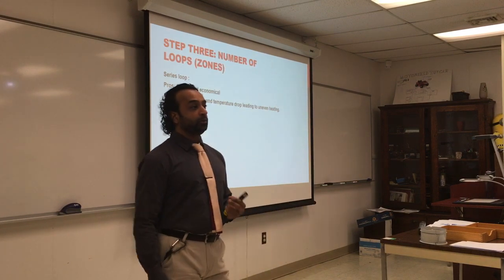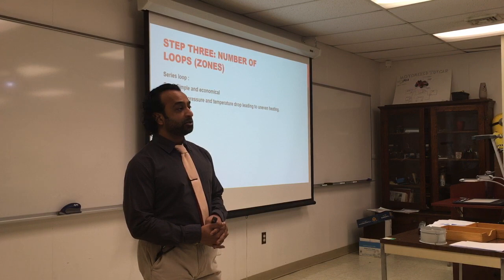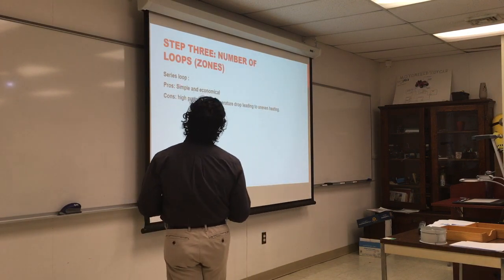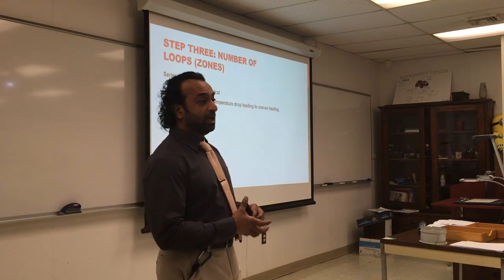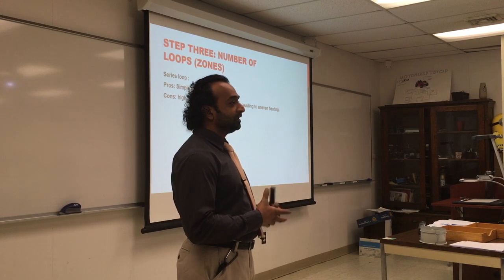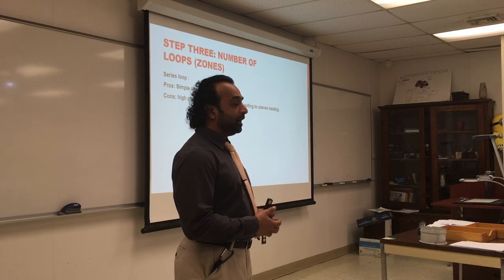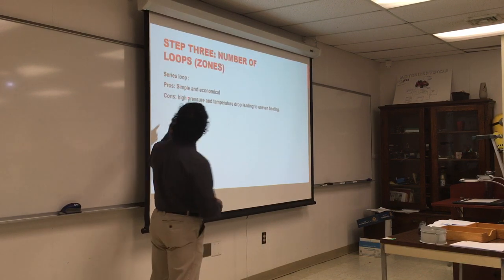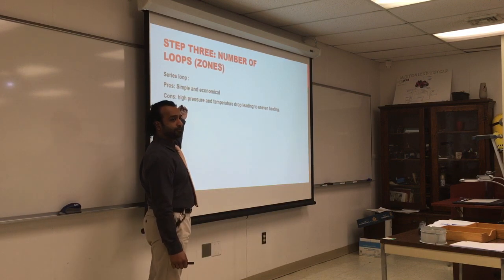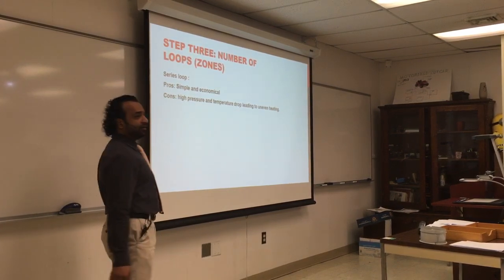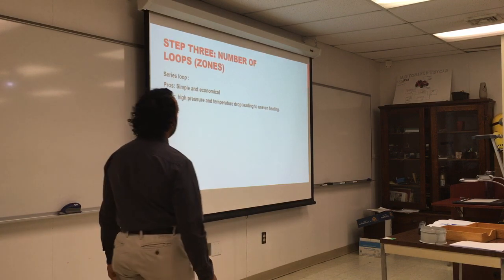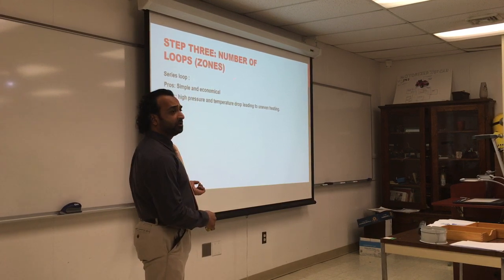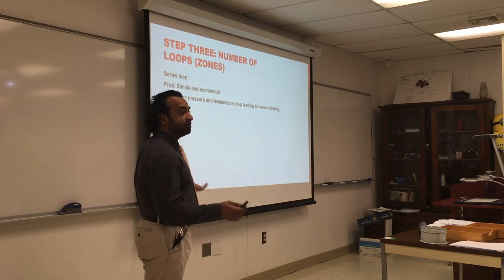Now we look at the boiler loops. Always measure twice, cut once, put a layout, measure it, and have a plot of what you're going to do. For a three-bedroom house, depending on size, you want at least two zones. The more zoning you have, the more efficiency the system will have. A series loop is very simple, very economical, and easy to install, but you will have high pressure losses and temperature drop that lead to uneven heating of the house. It's ideal for a studio, one-bedroom apartment, small loft, or open space.